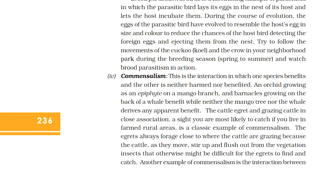Fourth, commensalism: this is the interaction in which one species benefits and the other is neither harmed nor benefited. An orchid growing as an epiphyte on a mango branch and a barnacle growing on the back of a whale benefit, while neither the mango tree nor the whale derives any apparent benefit. The cattle egret and grazing cattle in close association is a classic example of commensalism. The egrets always forage close to where cattle are grazing because the cattle, as they move, stir up and flush out insects from the vegetation that would otherwise be difficult for the egrets to find and catch. Another example is the interaction between sea anemone with stinging tentacles and the clown fish that lives among them: the fish gets protection from predators which stay away from the stinging tentacles, while the anemone does not appear to derive any benefit.